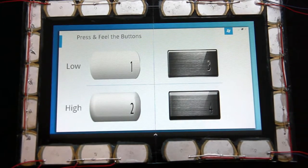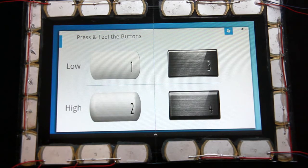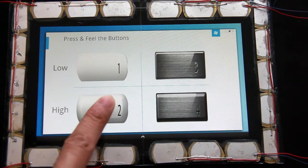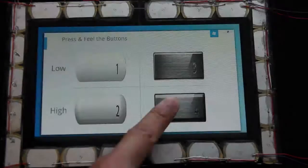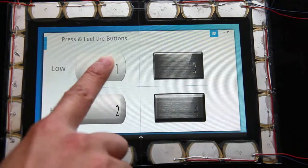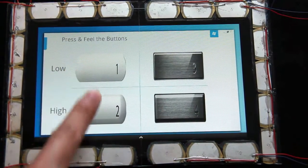The first scenario is a simple one. It focuses on the sensations that can be delivered with a haptic display. The visual display shows four buttons. The buttons on the left have a rough surface texture. The buttons on the right have a smooth surface texture. The texture can be felt by sliding a finger over the button.